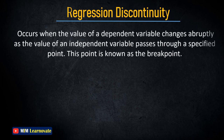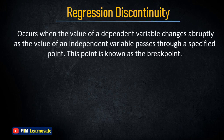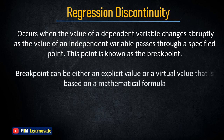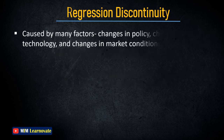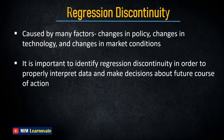Regression Discontinuity: Regression discontinuity occurs when the value of a dependent variable changes abruptly as the value of an independent variable passes through a specified point known as the breakpoint. The breakpoint can be either an explicit value or a virtual value based on a mathematical formula. Regression discontinuity can be caused by many factors including changes in policy, technology, and market conditions, and it is important to identify it in order to properly interpret data.